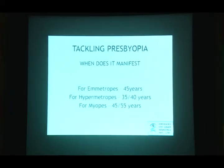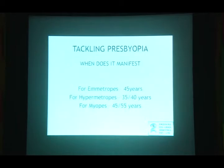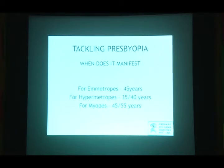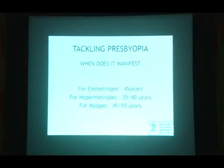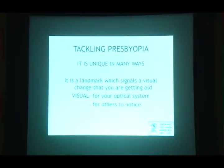When does presbyopia manifest? For emmetropes it usually manifests around age 45. For hypermetropes, they need reading glasses as early as 32–38 depending on their hyperopia. For myopes, depending on their degree of myopia, they can manage without glasses until age 55 if they are around -2.0 to -2.5. Manifestation happens when the ciliary body stops accommodating, but the point at which a patient actually starts wearing glasses varies.